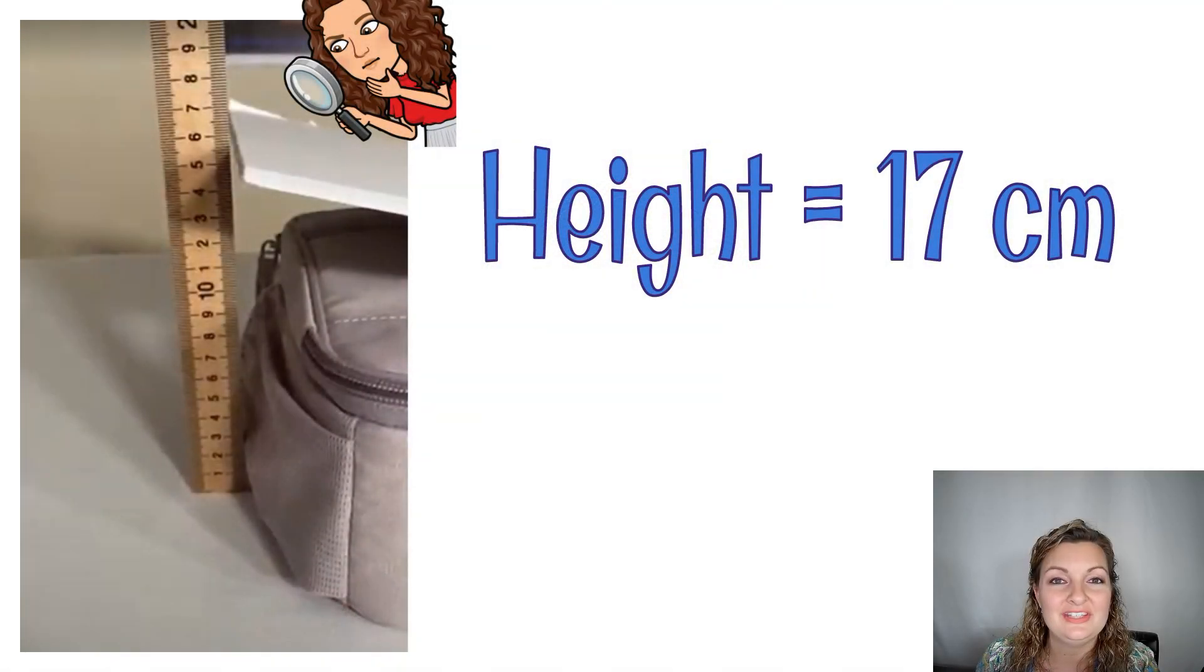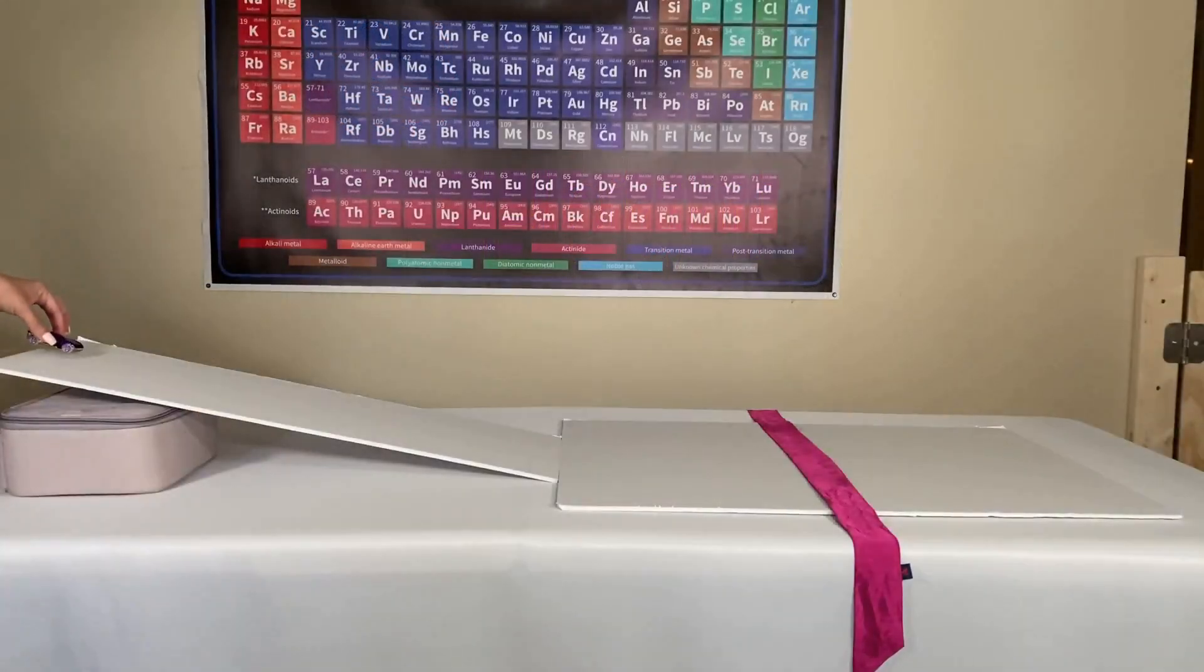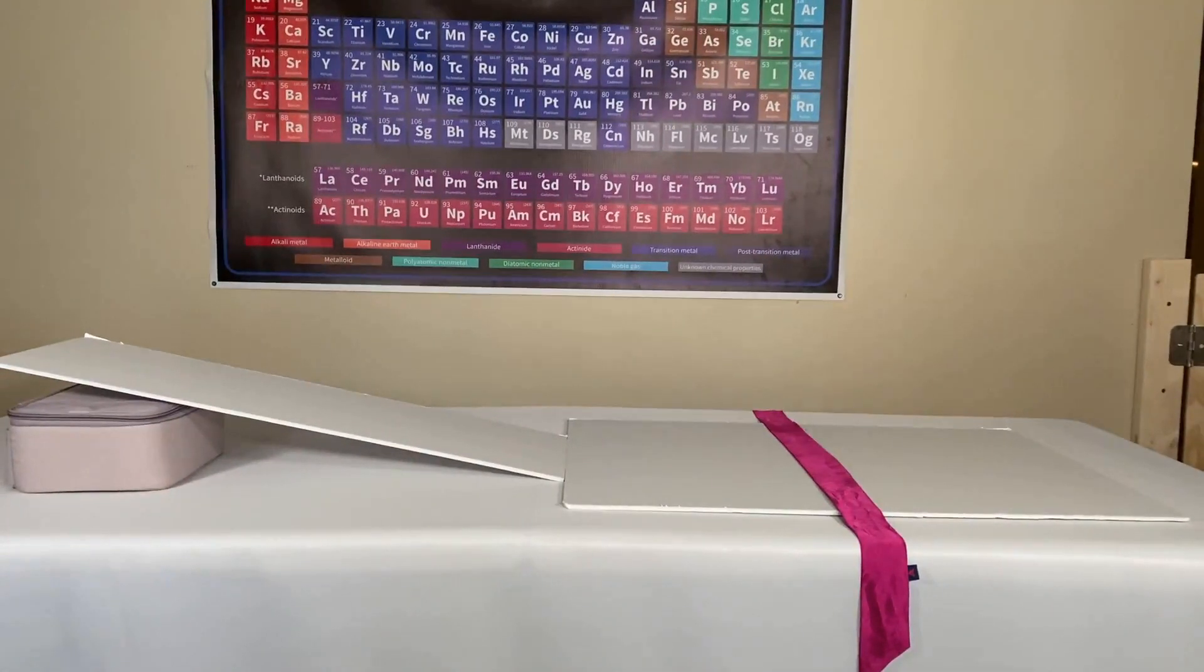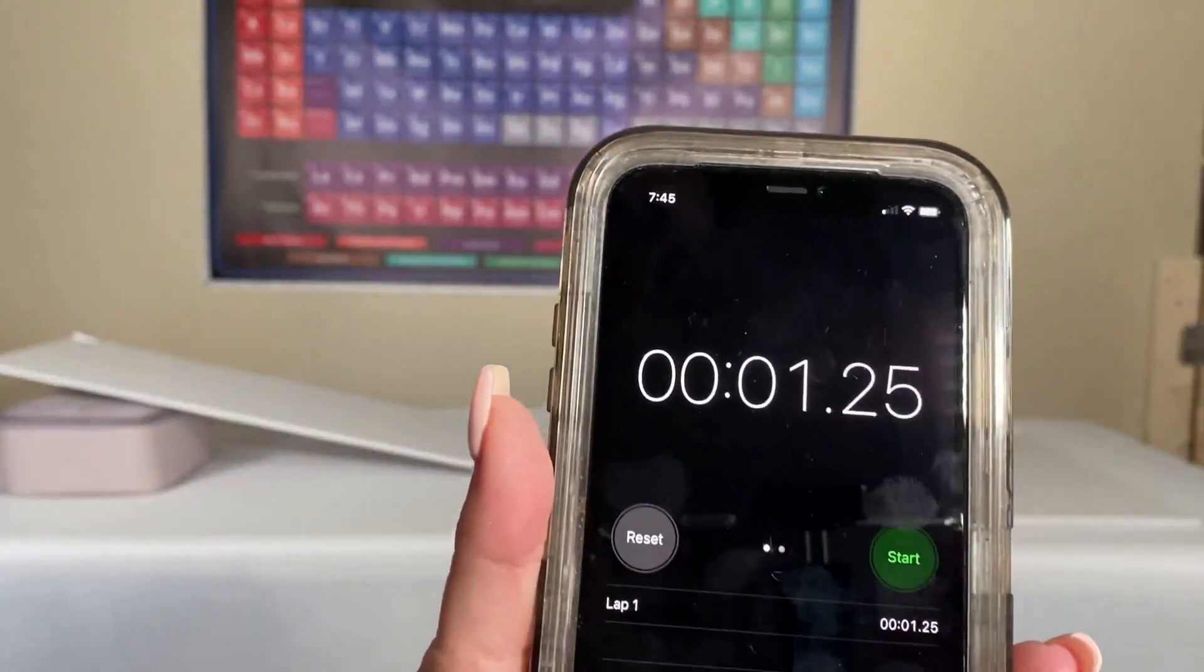So I took the mass of the Hot Wheels car. Make sure you zero out your scale and it's 29 grams. I measured my height, it was 17 centimeters. All right, time to do your first trial. Put your Hot Wheels car at the top of the ramp, get your stopwatch ready, push start, let the car go. At that one meter mark, go ahead and push stop and check your time and record it. Ours was 1.25 seconds for the first trial.